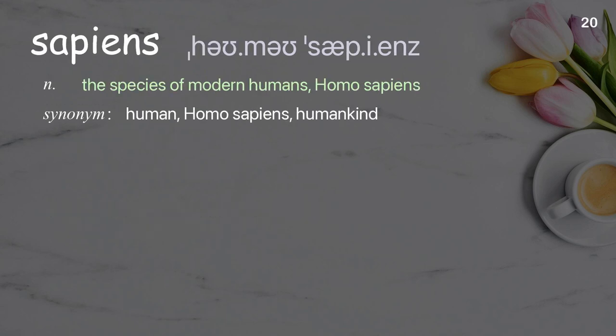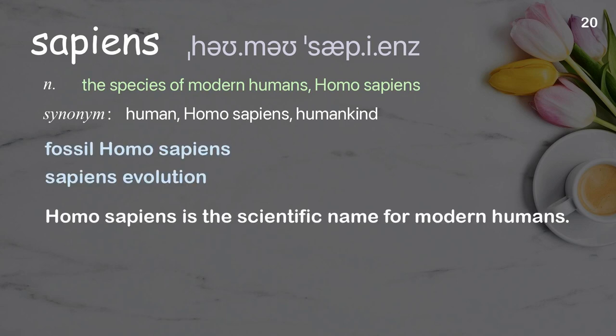Sapiens: The species of modern humans, Homo sapiens. Examples: fossil Homo sapiens, sapiens evolution. Homo sapiens is the scientific name for modern humans.